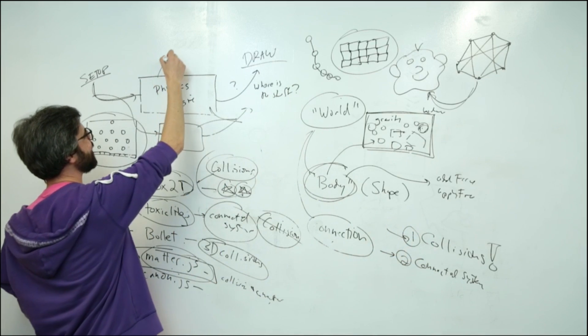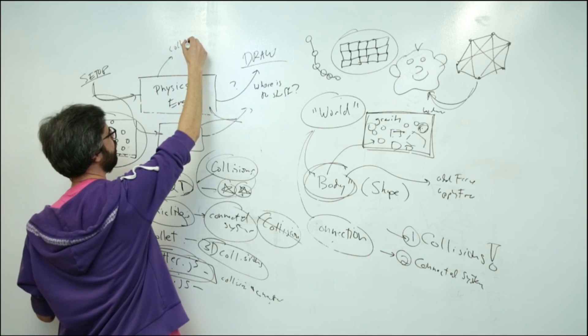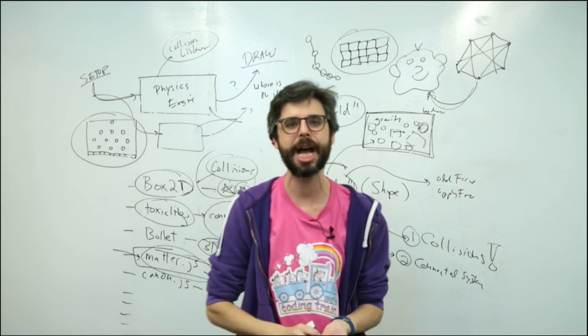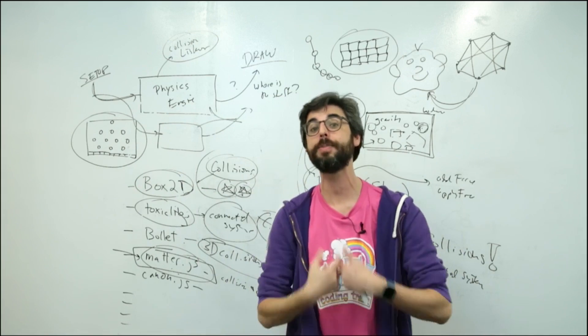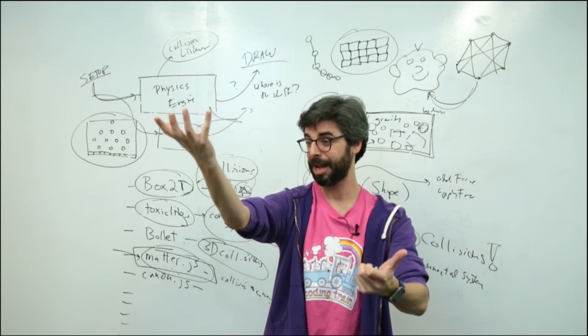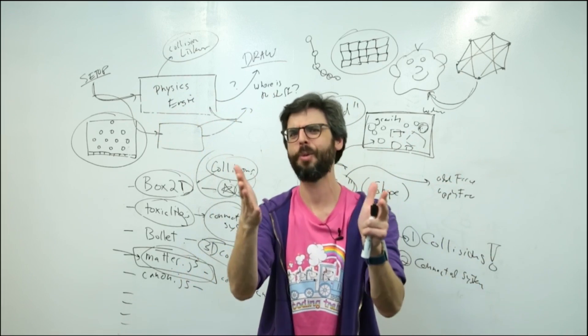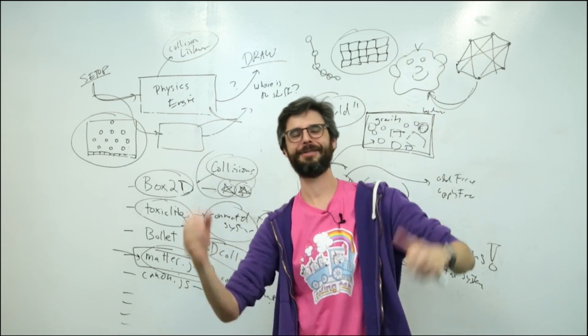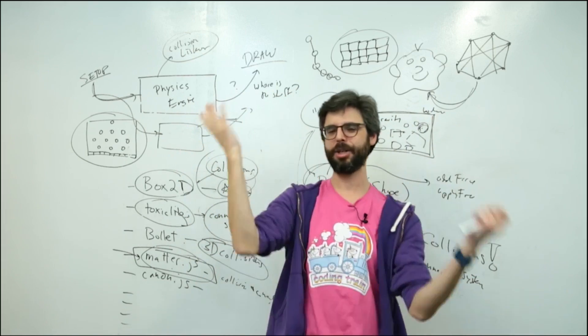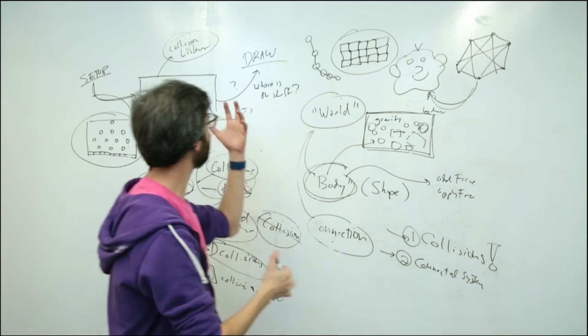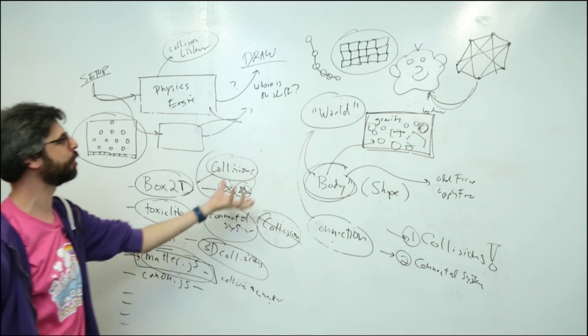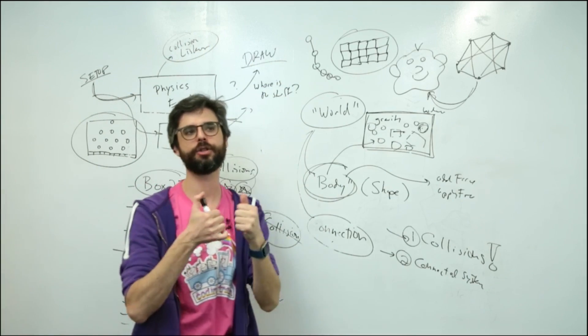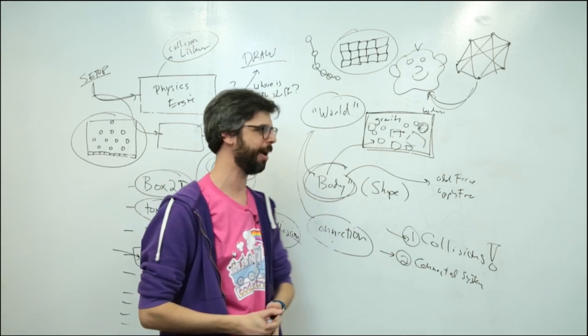So most physics engines will have this idea of a collision listener so you can write a callback function or create some type of object that sits there and tells you information about, hey, there's been an event. These two things collided. Here's object one. Here's object two. Here's their properties. What are you going to do about it? It's like, oh, if it's a purple object with a red object, it plays C. If it's a green object with a pink object, it plays the note D. So you're going to want to look for something like a listener to be able to also not just extract where the things are that you want to draw but to extract moments in time that are certain events like collision events that you want to handle in a certain way.